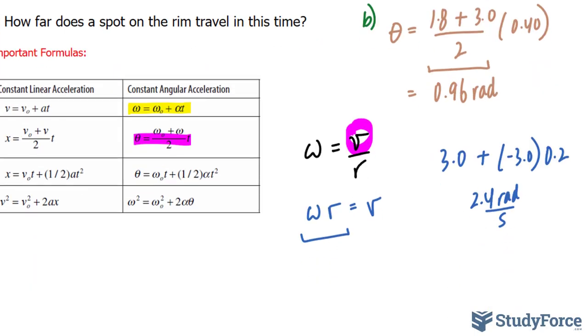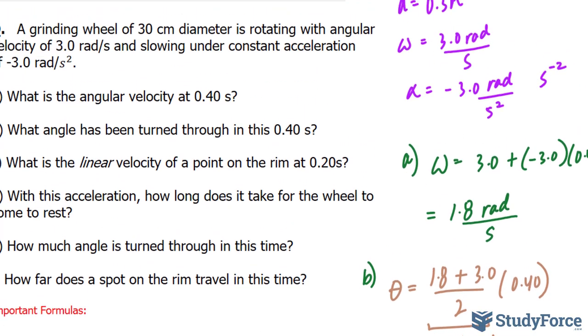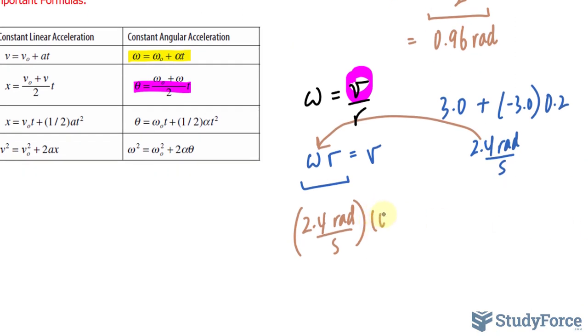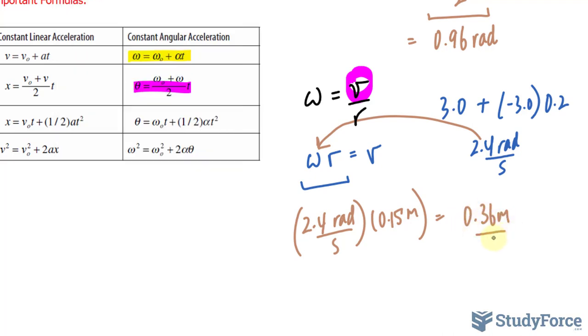That will get substituted right into there. And then we multiply that by the radius. So, 2.4 radians per second multiplied to the radius being half of 0.3, which is 0.15. That's in meters. So, multiplying these values out, 2.4 multiplied to 0.15 gives us 0.36 meters per second.